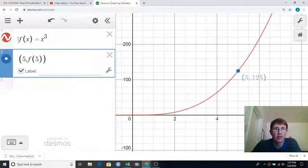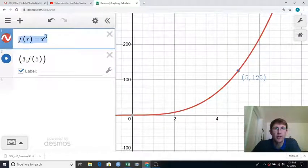All right, here we are in Desmos. We've got our function that we've been playing with, x cubed, and we're focusing at time 5, and we've got that point marked right there.